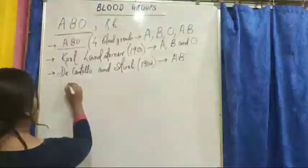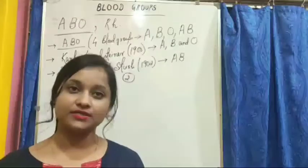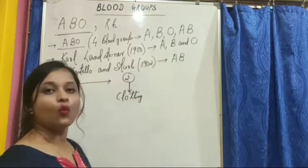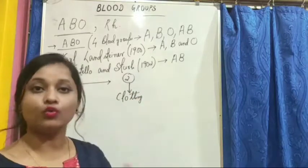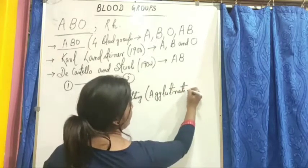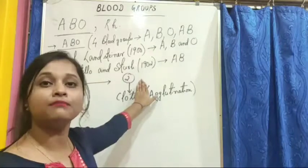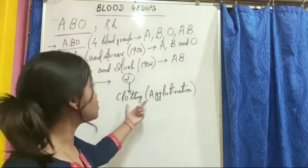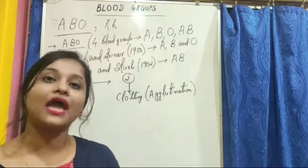Karl Landsteiner observed that when blood is transferred from one person to another person, there is clotting in the blood. This clotting is also known as agglutination, as described by Karl Landsteiner. He then investigated what was the reason behind this clotting.